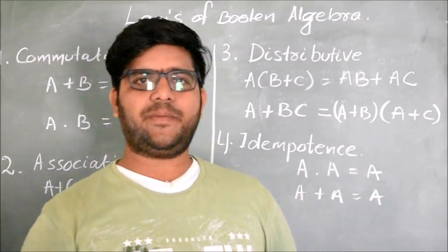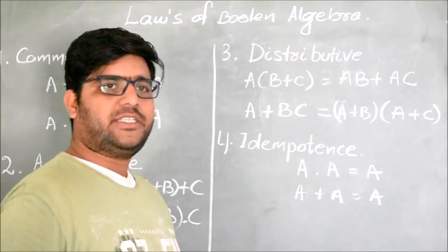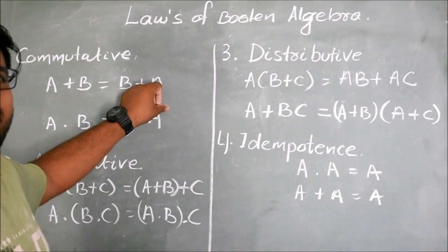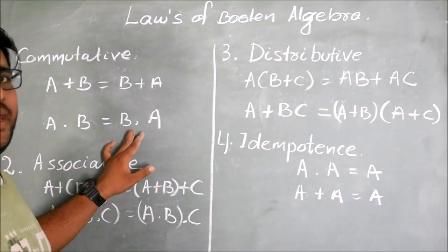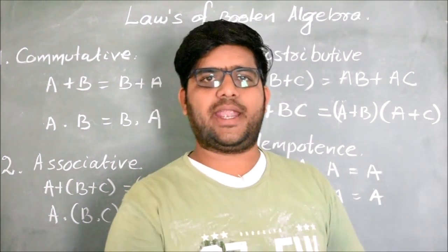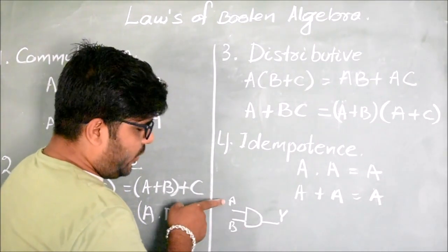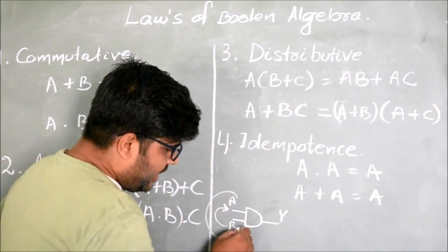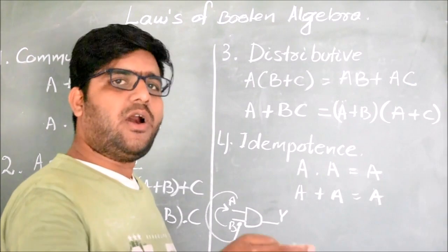Let us discuss some laws which help you to solve Boolean algebra equations. Those laws are: Commutative Law, Associative Law, Distributive Law. The Commutative Law says that A OR B equals B OR A, and A AND B equals B AND A. So the output remains unchanged when you swap the inputs. If you interchange the two inputs of an AND gate or OR gate, the output remains the same.